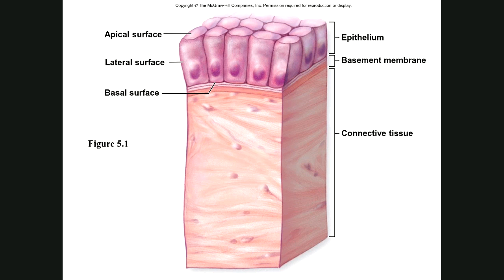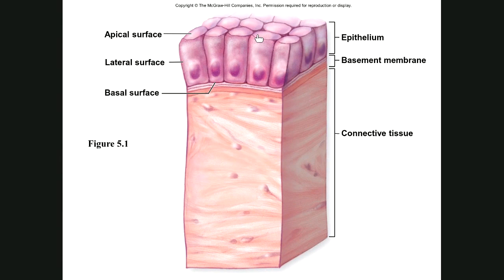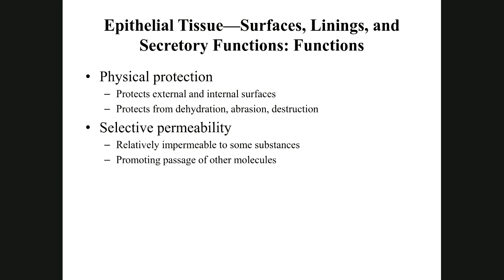Stem cells undergo mitosis and continually replace lost cells. Here's an image showing connective tissue below with fibers, and above it a simple columnar epithelial layer — only one cell layer thick. The basement membrane is visible: the basal lamina and reticular lamina together create it. The image also demonstrates polarity — the exposed apical surface and the attached basal surface.